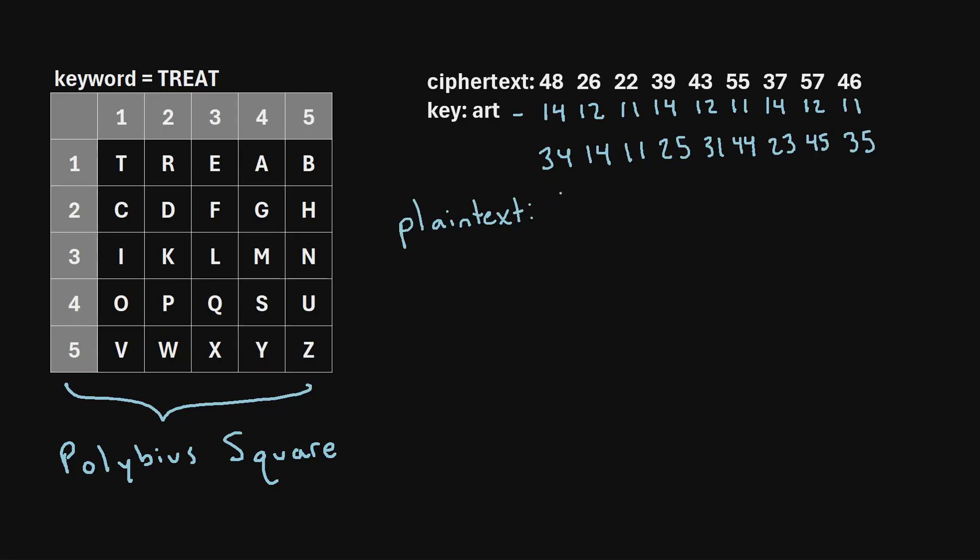And now the last step to getting our plaintext is just converting these numbers to letters using the Polybius square. So for example, we'll look at row 3, column 4. So in our Polybius square, row 3, column 4 corresponds to M. So we'll write M as our first letter. Then we'll find 1, 4. So row 1, column 4, that corresponds to A. And then we'll move on to 11. So row 1, column 1, that corresponds to T. And we'll just continue in this manner until we've decoded all of these numbers. And when we do that, we will find that our plaintext was math is fun. So those were just a couple quick examples of how to encrypt and decrypt text using the Nihilist cipher.